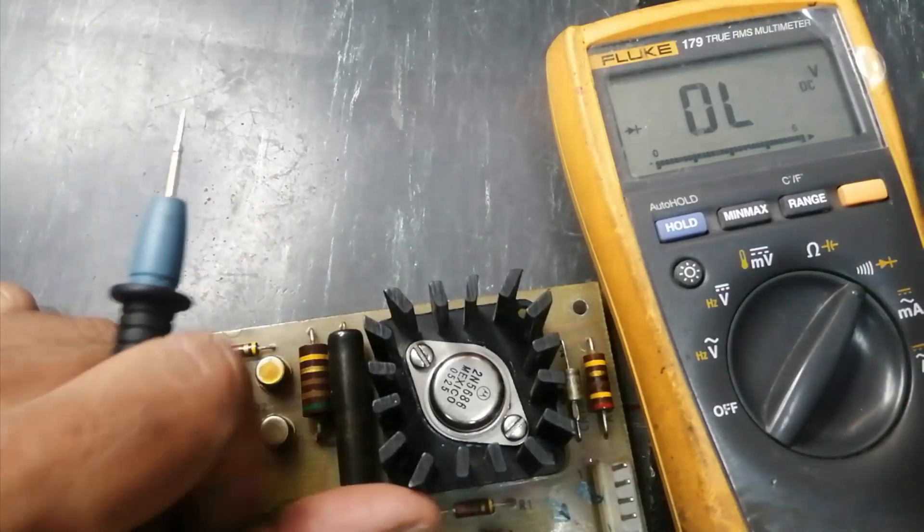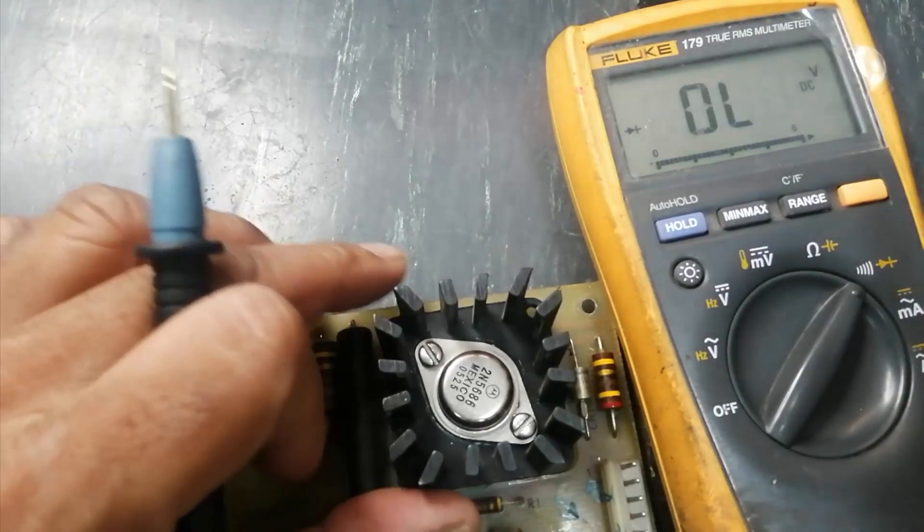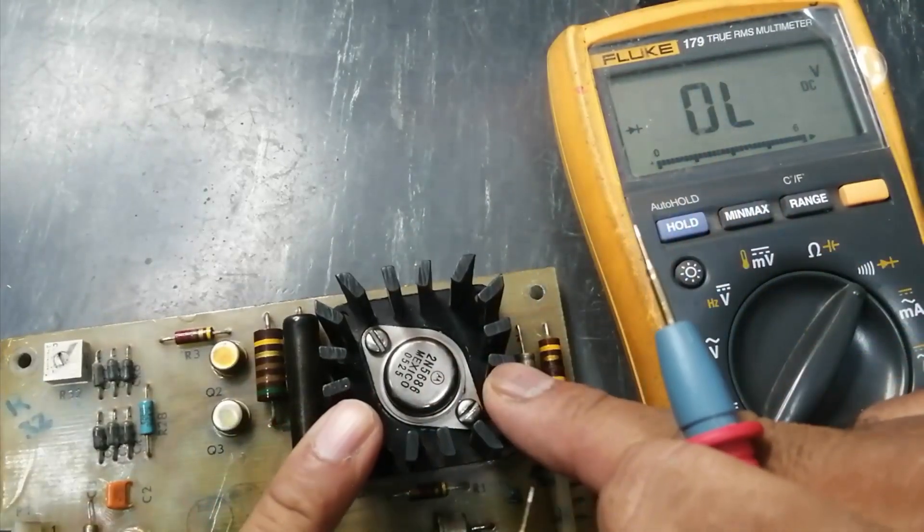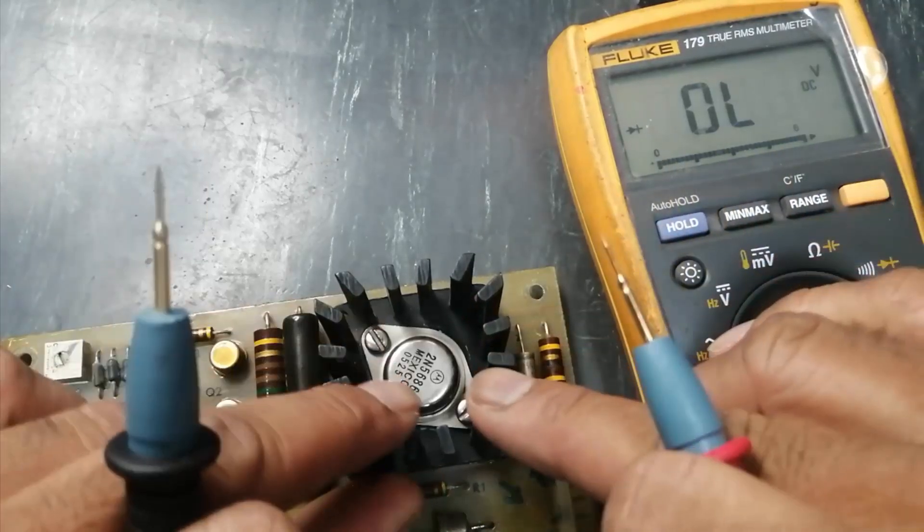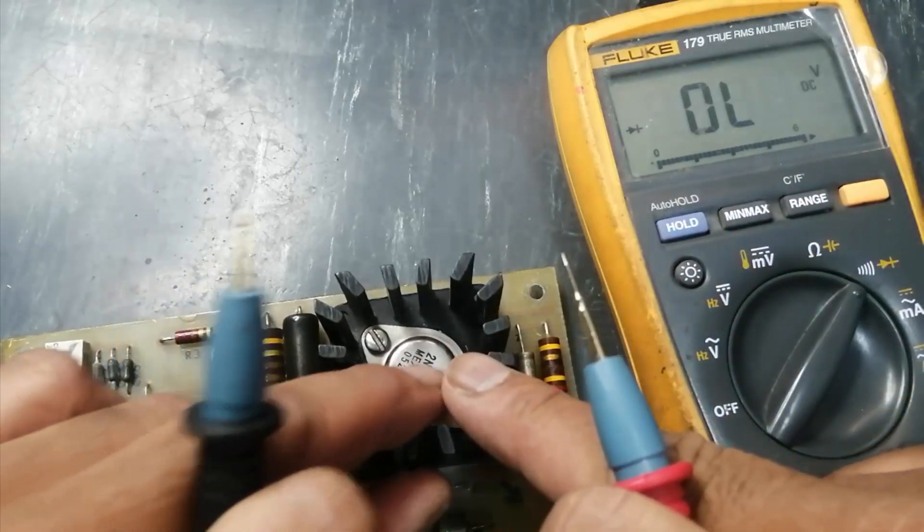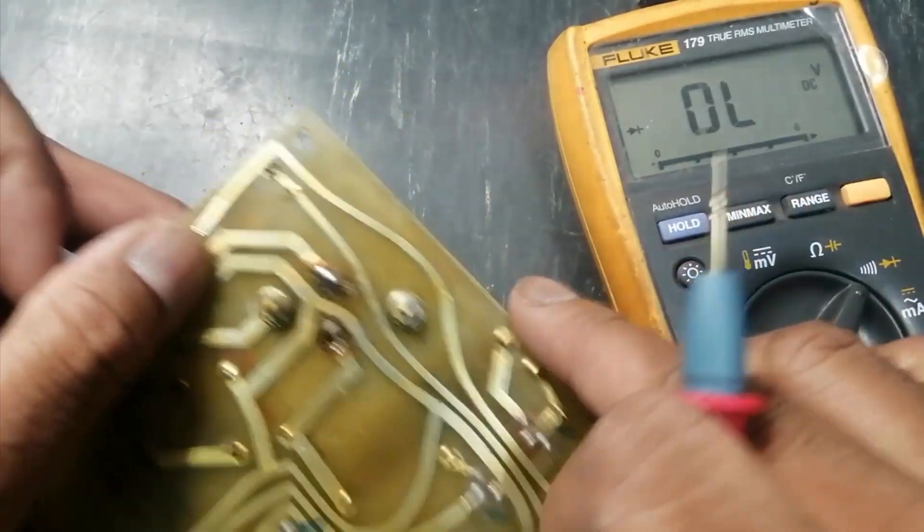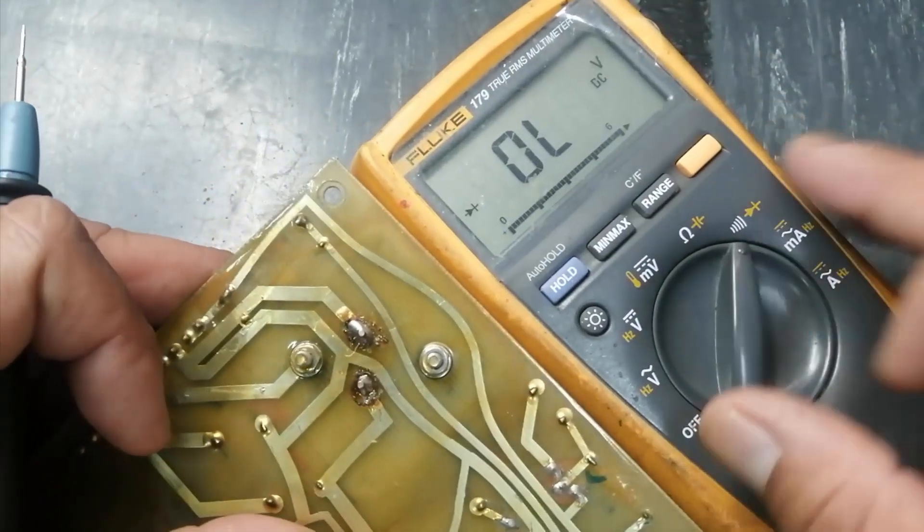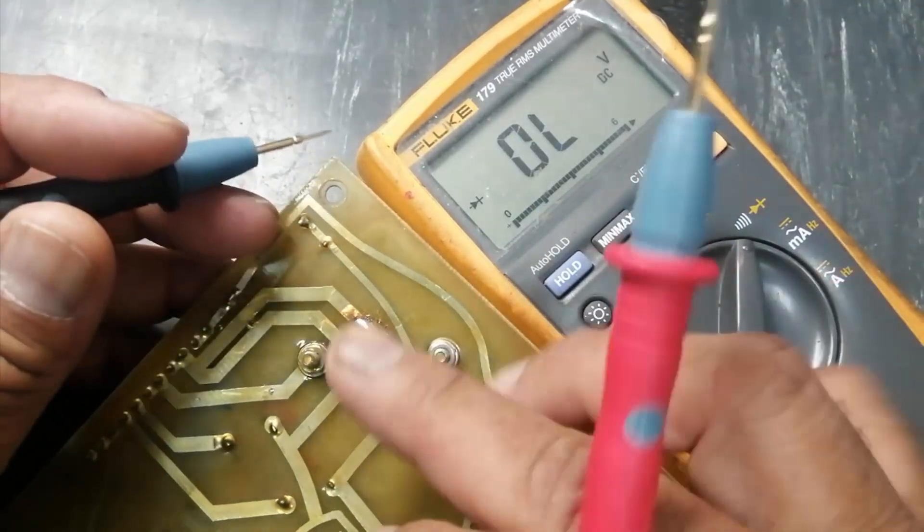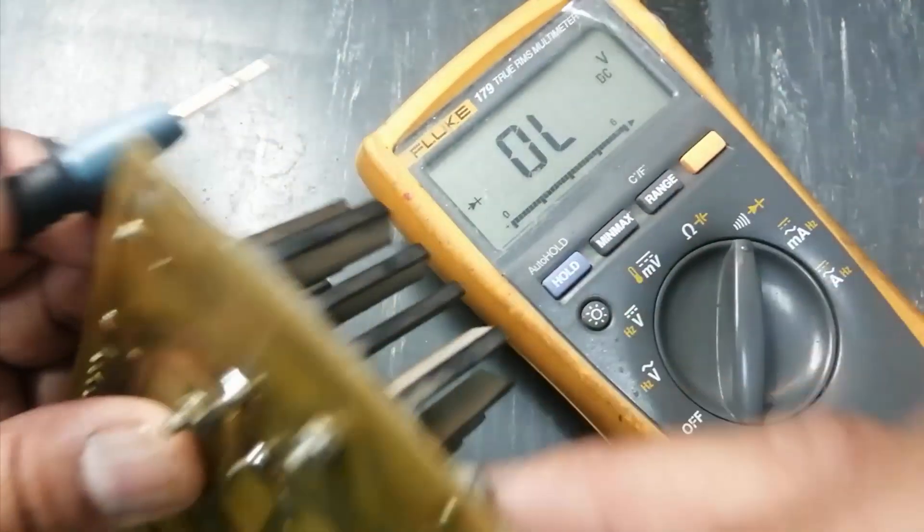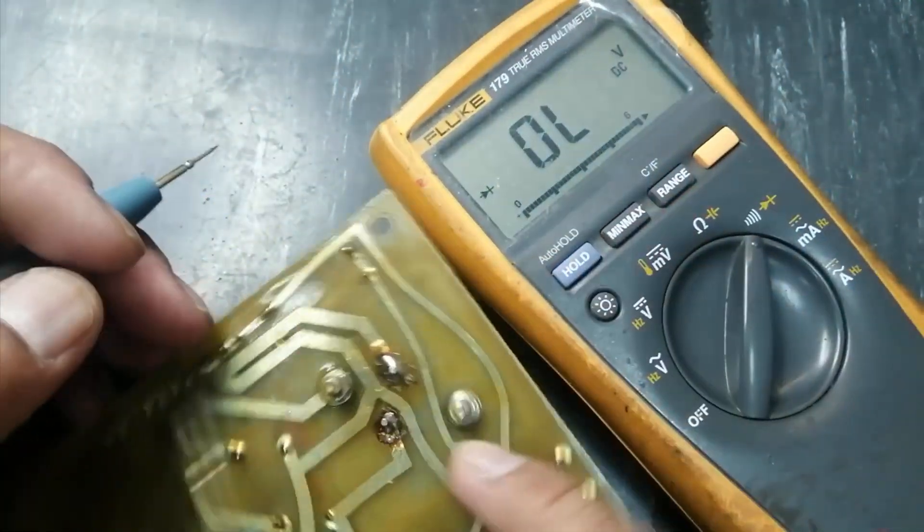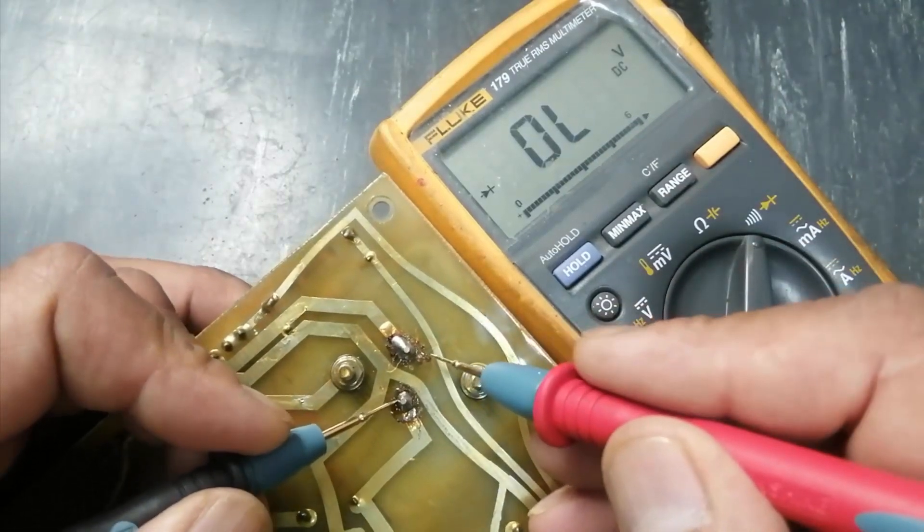Assalamualaikum warahmatullahi wabarakatuhu, friends. Welcome. While working on an AVR automatic voltage regulator, I received this board. It is not regulating the voltage. Why? It is not providing proper excitation to the winding in the first stage. Because this portion is power driver, the other circuit is normal. How can we find, how can we test our power transistor in circuit?